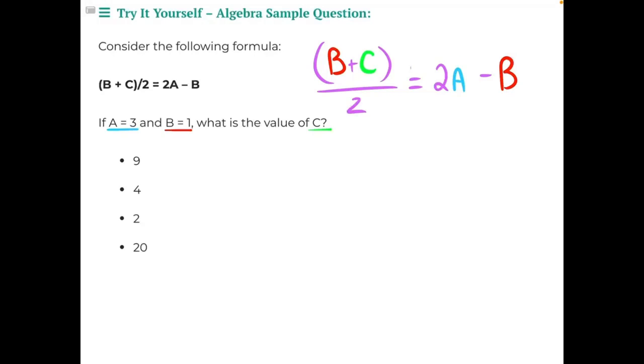Consider the following formula: b plus c divided by 2 equals 2a minus b. If a equals 3 and b equals 1, what is the value of c?